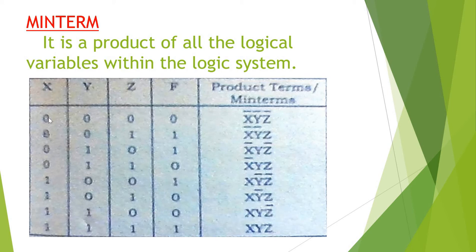In minterm, if the value of a variable is zero, it is represented as x-bar. One means it is represented as x. So zero means x-bar, one means x. For example, when all values are zero, we write x-bar, y-bar, z-bar. That is the minterm for that case.